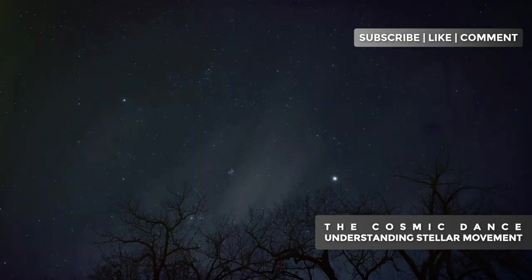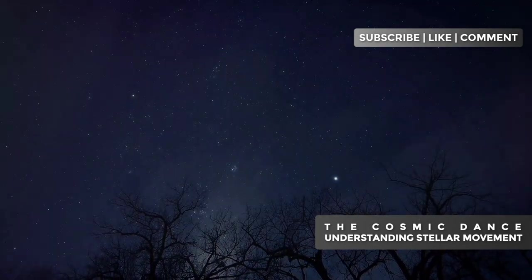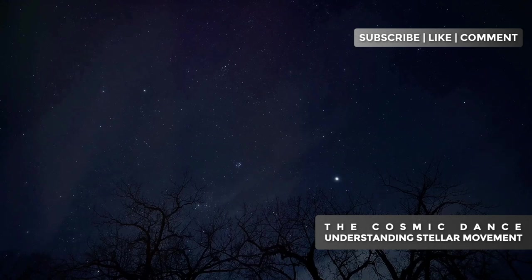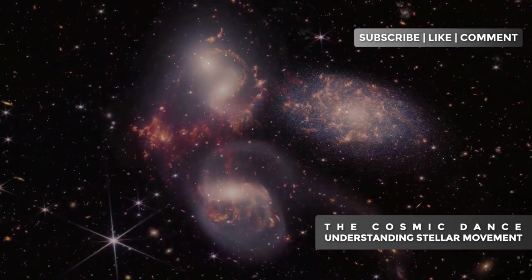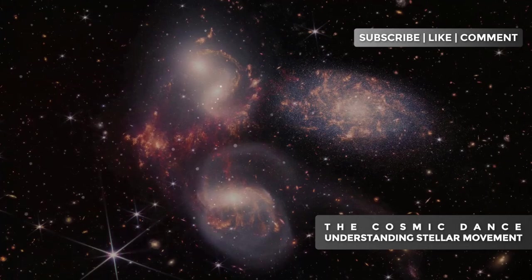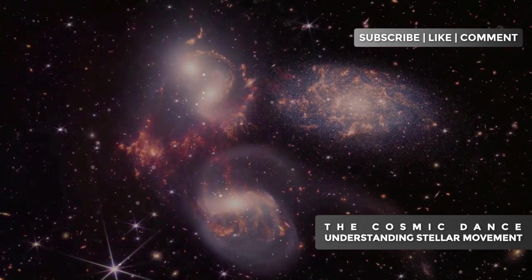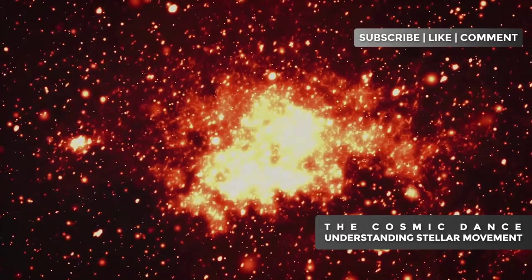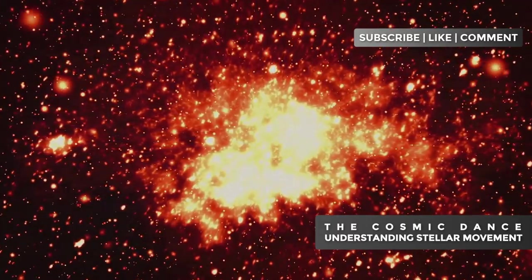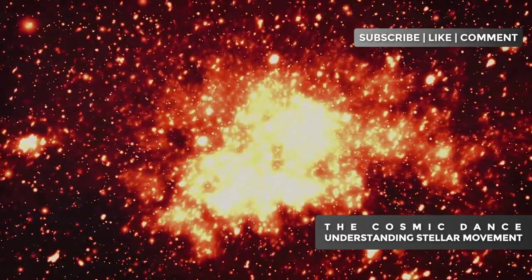A notable example is the Magellanic Stream, a long strip of gas and stars extending over 100 degrees in the sky. This structure is the result of the interaction between the Milky Way and the Magellanic Clouds, two dwarf galaxies that orbit our galaxy. The Milky Way's tidal forces are slowly tearing these smaller galaxies apart, creating this impressive stream of debris.